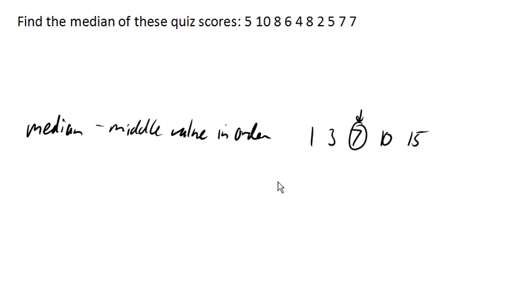If my data was 1, 3, 7, 8, 10, 15, notice now the middle is right between two values. And so when that happens, we find the mean of those two values. In other words, we add them up and divide by 2. And we get 7.5 as the median.